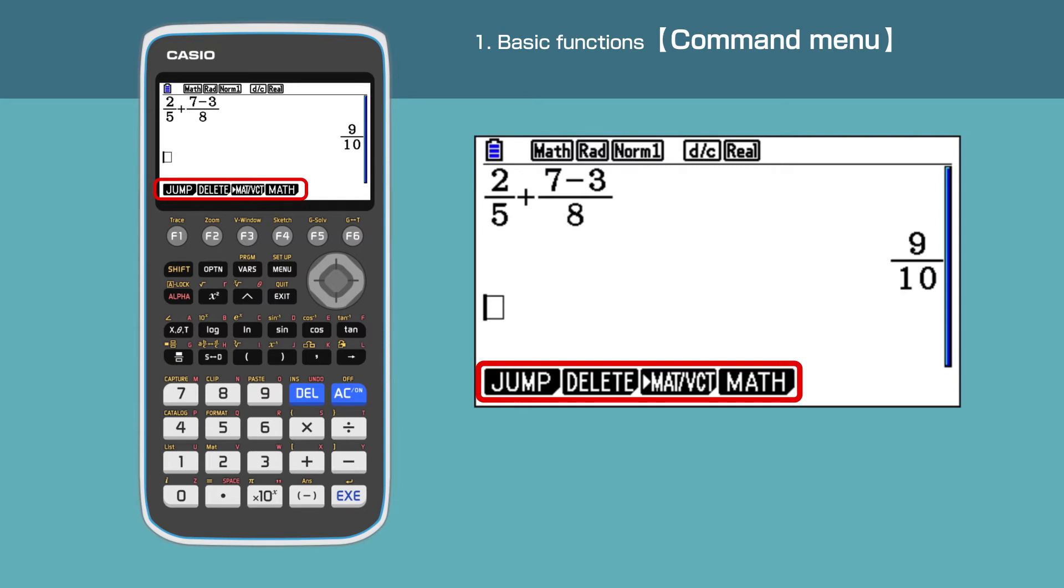You will notice there are black boxes such as jump and delete at the bottom of the screen. These are contextual commands. In this example, the screen only shows four command items, but it can display a maximum of six. We can select these command items by pressing F1 to F6 keys right below the screen.